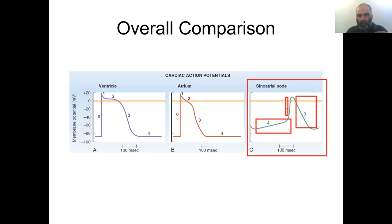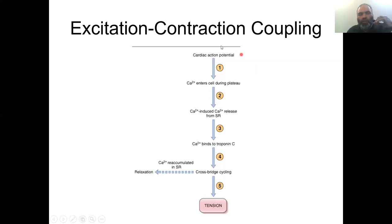This is the excitation-contraction coupling. So cardiac action potential takes place, calcium enters the cell during plateau, then there is this thing called calcium-induced calcium release. This is also from the SR, the sarcoplasmic reticulum. These are also called calcium sparks. We'll see a pictorial depiction of this in the next slide.